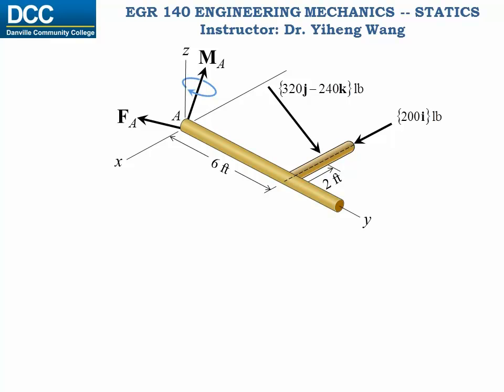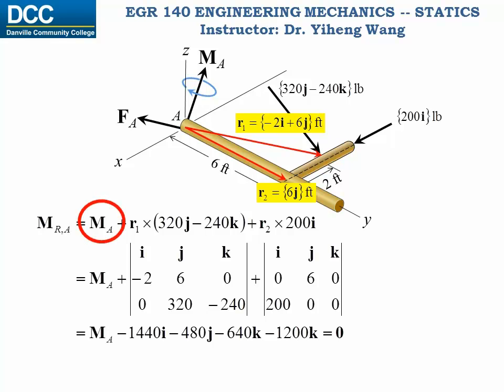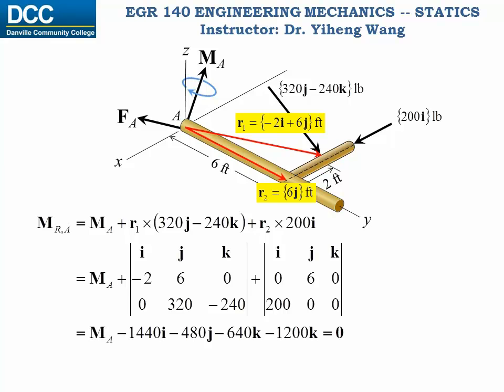To summarize the resultant moment, you can do it about any arbitrary point, but you want to do it in a way that eliminates the most unknowns in your equations. Therefore, here we summarize the resultant moment about point A, since force F_A has its line of action passing through point A and therefore creates no moment about point A, and will not show up in your equations. So to summarize the moment about point A in vector formulation, we need to first find the position vectors from point A to any point on the lines of action of the two applied forces. The resultant M_A equals the support couple moment reaction at point A, plus the moment caused by the first applied force, plus the moment caused by the second applied force. And that's all the external moments.